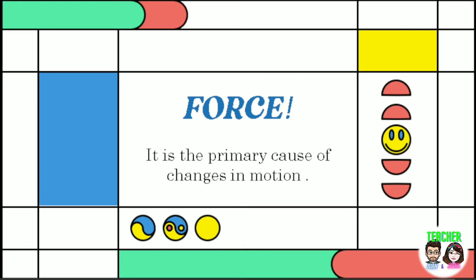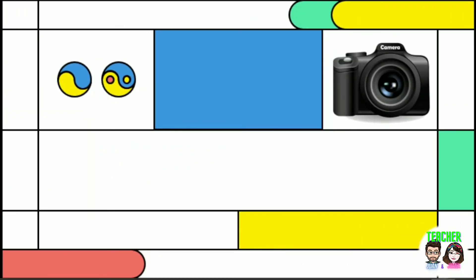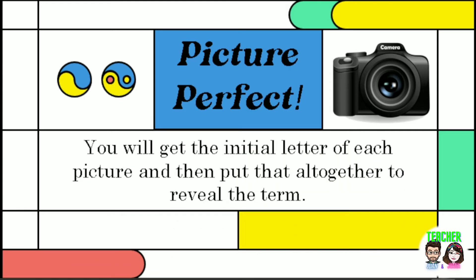In this lesson, you will investigate the relationship between the amount of force applied and the mass of the object to the amount of change in the object's motion. It is based on the most essential learning competency with a code S8FAIA15. Before we directly discuss the lesson, let us have a short game. This game is entitled Picture Perfect. In this game, you will get the initial letter of each picture and then put that all together to reveal the term.